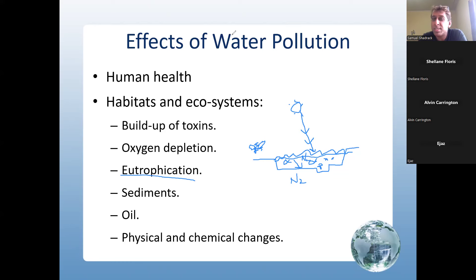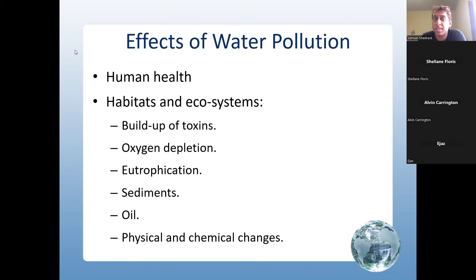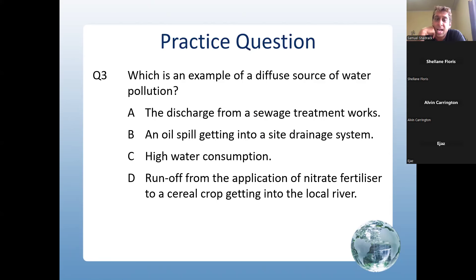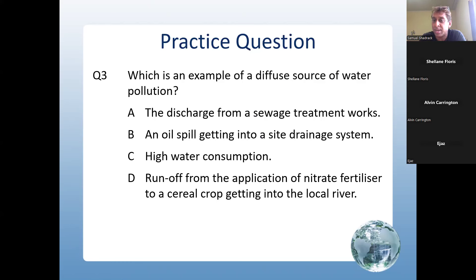Practice question: which is an example of a diffuse source of water pollution? Options include: the discharge from a sewage treatment plant — no; an oil spill getting into the drainage system — no; high water consumption — no; runoff from the application of nitrate fertilizers to a cereal crop getting into the local river — yes. That is the correct answer.